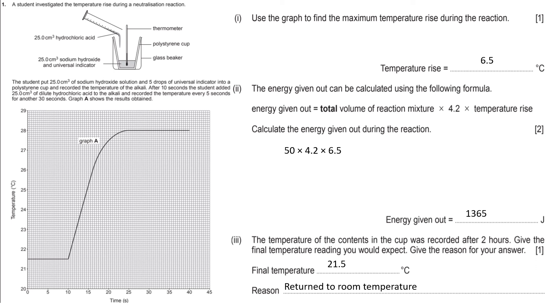times a constant, 4.2, times 6.5, which is the rising temperature we calculated from part I. If we times all that together, we work out the energy given out is 1,365 joules.